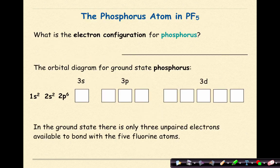Let's consider the phosphorus atom in PF5. What is the electron configuration for phosphorus? We know that phosphorus is going to be 1S2, 2S2, 2P6, 3S2, 3P3.